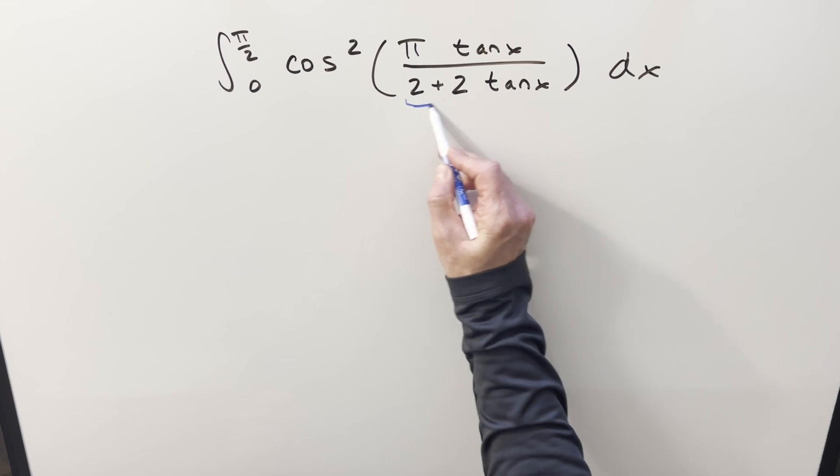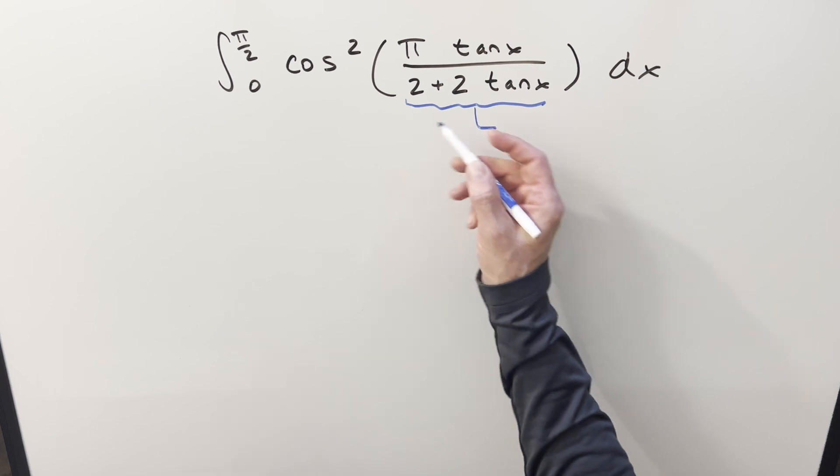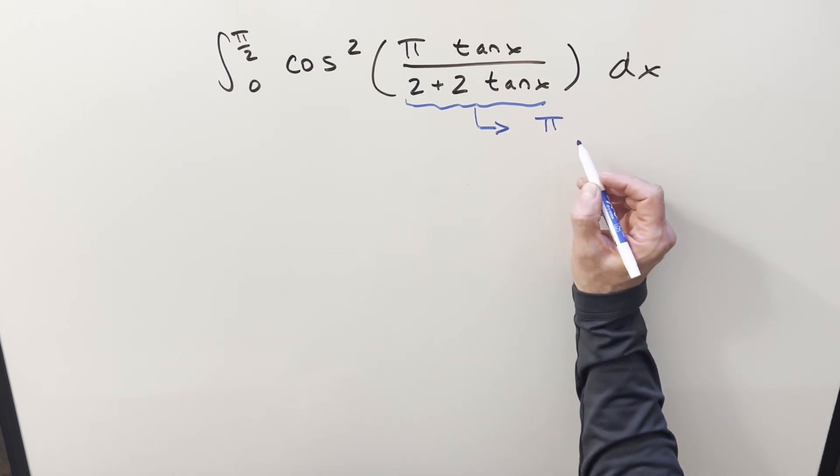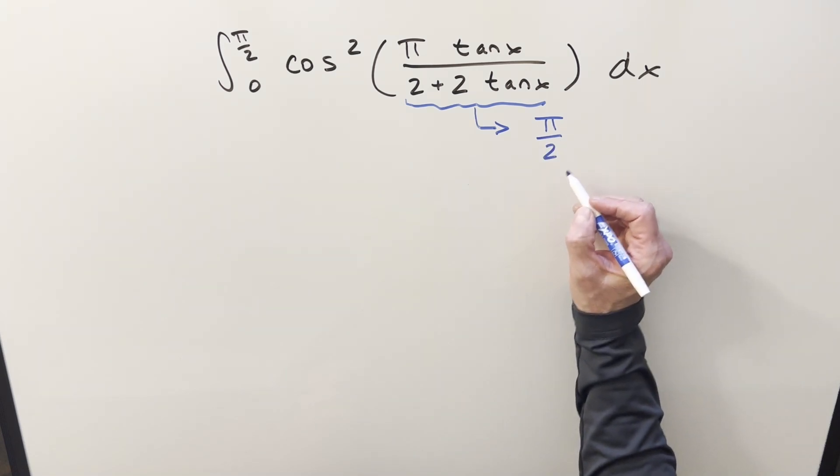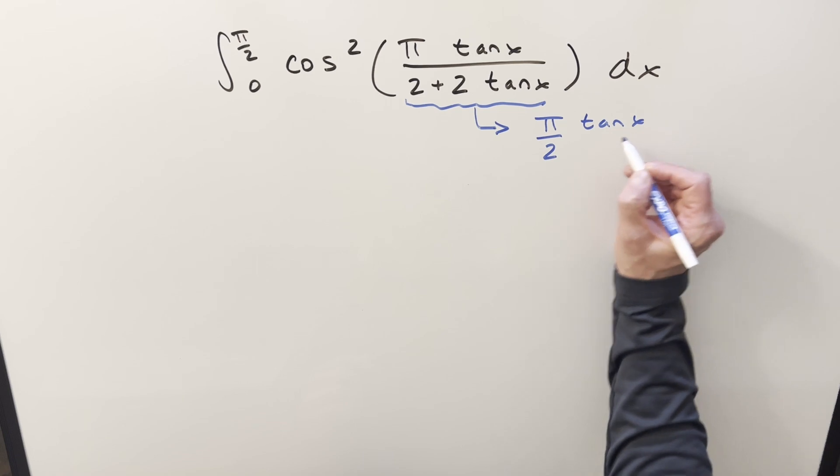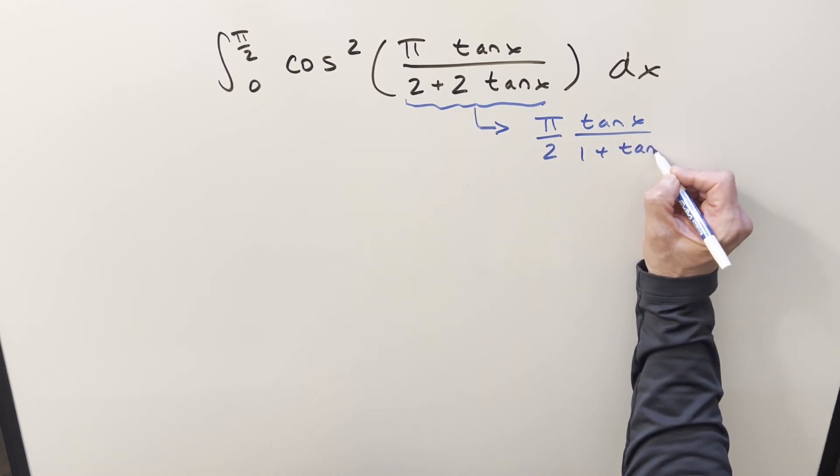The real problem here is that what's inside the cosine is very complicated looking. But the thing I noticed, just having 2 plus 2, I think we can just factor it. So if I factor a 2 out here, I can create a π/2 here, and then we're going to have tan x in the numerator, and this denominator is just going to be 1 plus tan x.